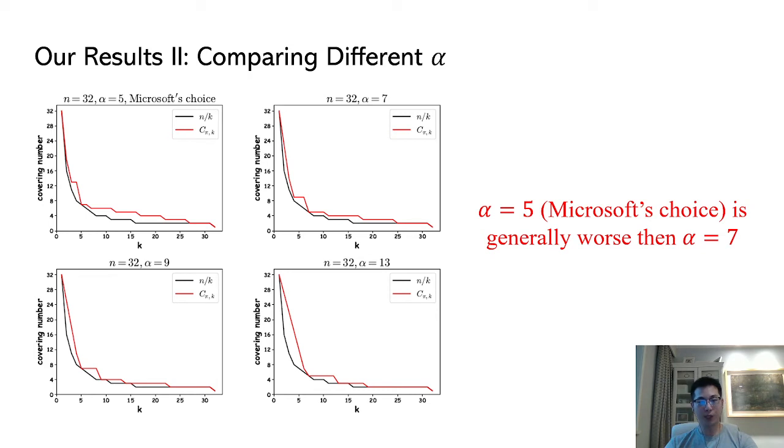In terms of 32-bit CPU, we have selected four different rotation numbers: 5, 7, 9, and 13, and depicted their Calvary numbers versus k, the min entropy of sources. The red lines represent the Calvary numbers of certain rotations, while the black line n over k represents the optimal Calvary numbers. We can see that Microsoft's choice 5 is reasonable since it's very close to the optimal line, but it's generally worse than 7.